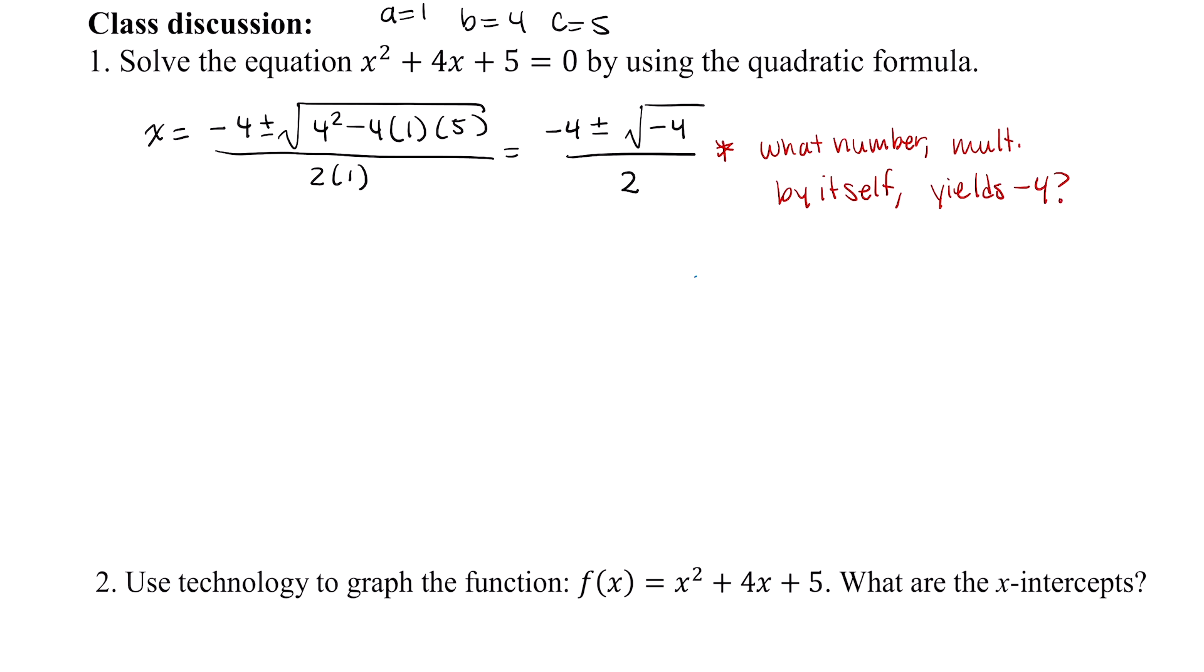Well, no real number has this property. And we can see this by trying 2 times 2. That gives us positive 4. Negative 2 times negative 2 gives us positive 4. And then we can't do negative 2 times positive 2, since these numbers are not the same.